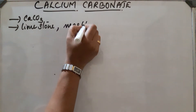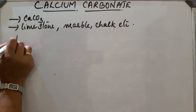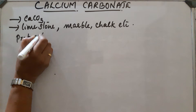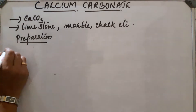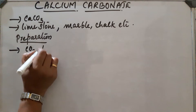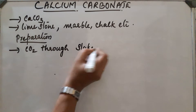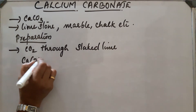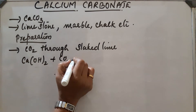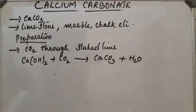Preparation: It is prepared by passing carbon dioxide through slaked lime. Slaked lime is Ca(OH)2, through which carbon dioxide is passed, and we can obtain calcium carbonate.